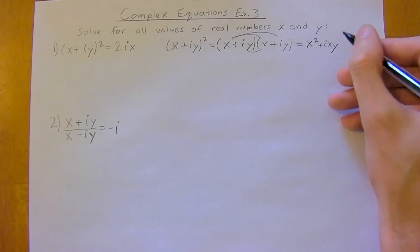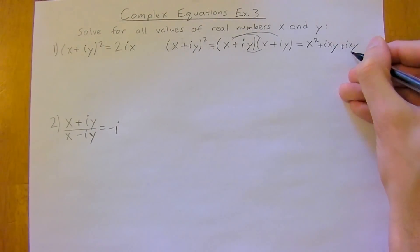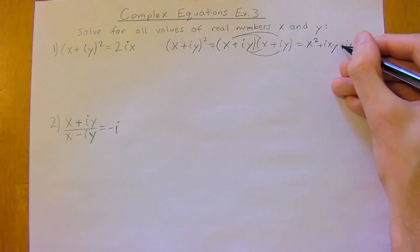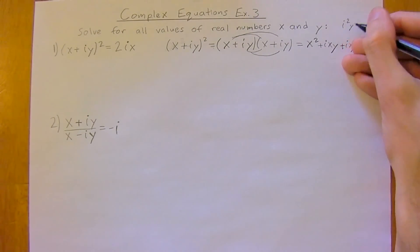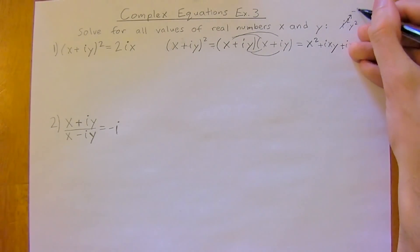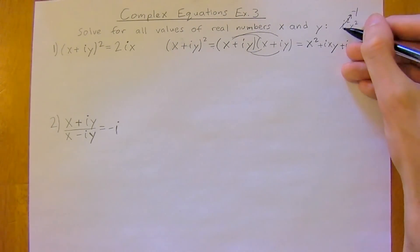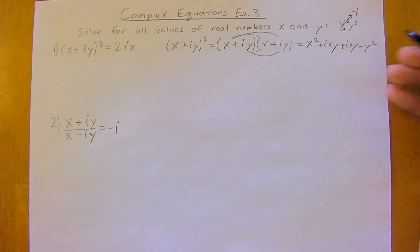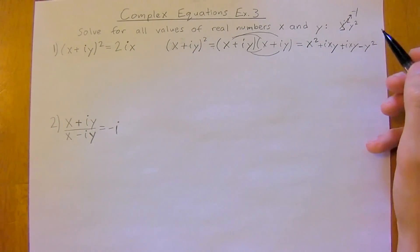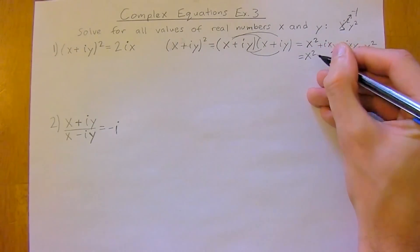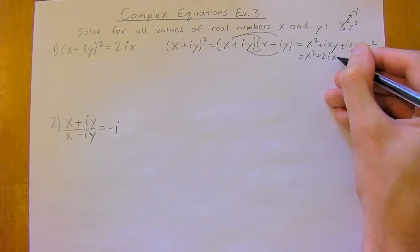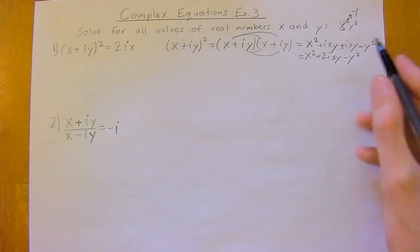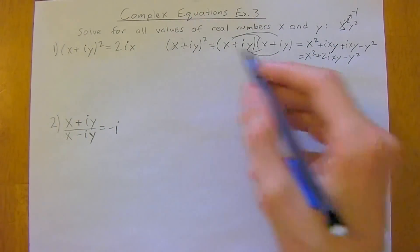Then again we're going to get another IXY, and finally we're going to have I squared Y squared. Recall that I squared is just negative 1, so this will just be minus Y squared. So we rewrite this again as X squared plus 2IXY minus Y squared.